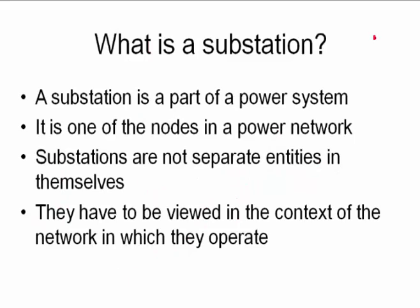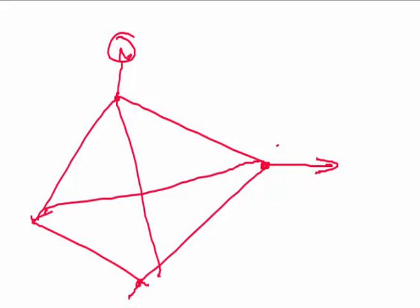But of course, they are not separate entities in themselves in the sense that they cannot exist all alone. So basically, they form a part of the network and you have to consider them in that context of the network in which they operate. So a substation is a part of the network and it is a node of the network.